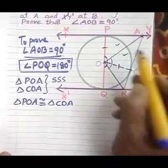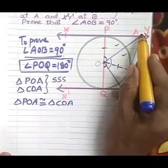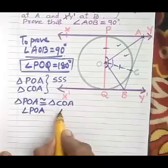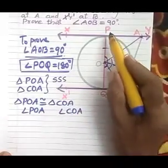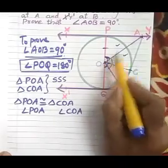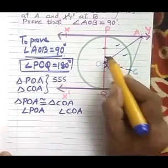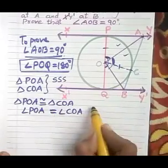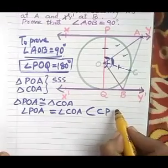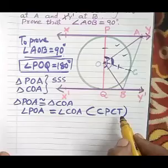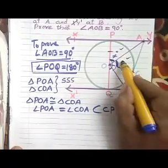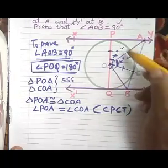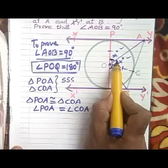Now what can we say about angles POA and COA? Angle POA and angle COA — these two angles are equal because by CPCT, these two triangles are congruent; therefore the two corresponding angles are equal. So we give them the measure X degrees — here also X degrees.